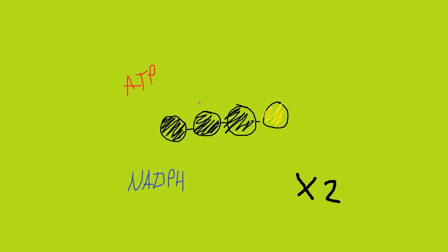The glycerate-3-phosphate molecule then reacts with ATP to produce ADP and an inorganic phosphate molecule. The NADPH also reacts with this glycerate-3-phosphate molecule to produce NADP. It's also worth noting that this happens twice.